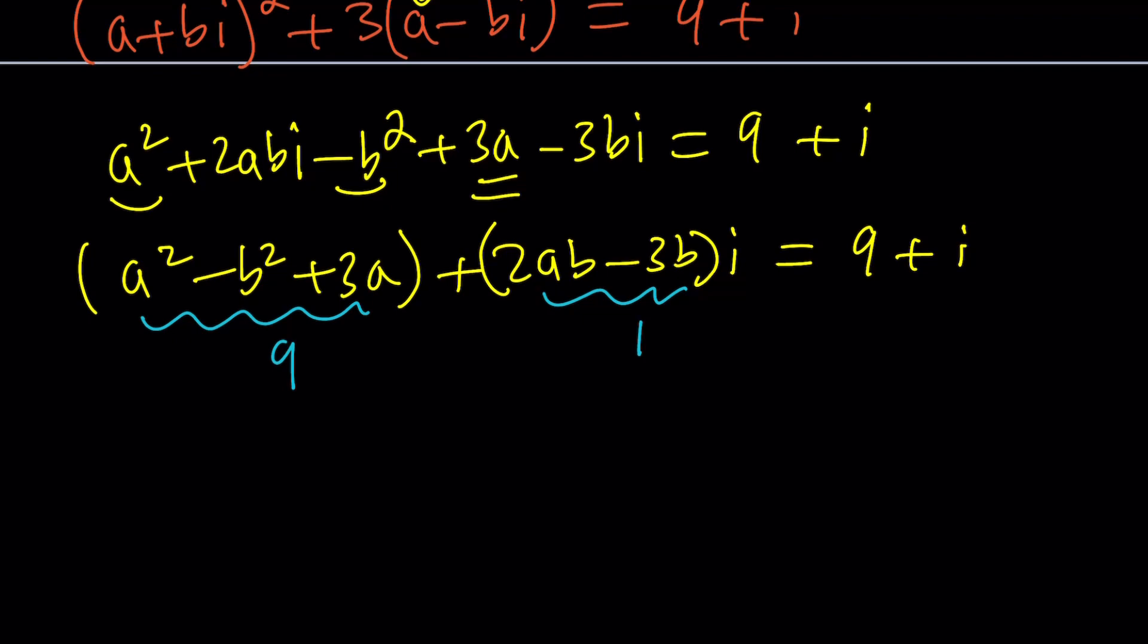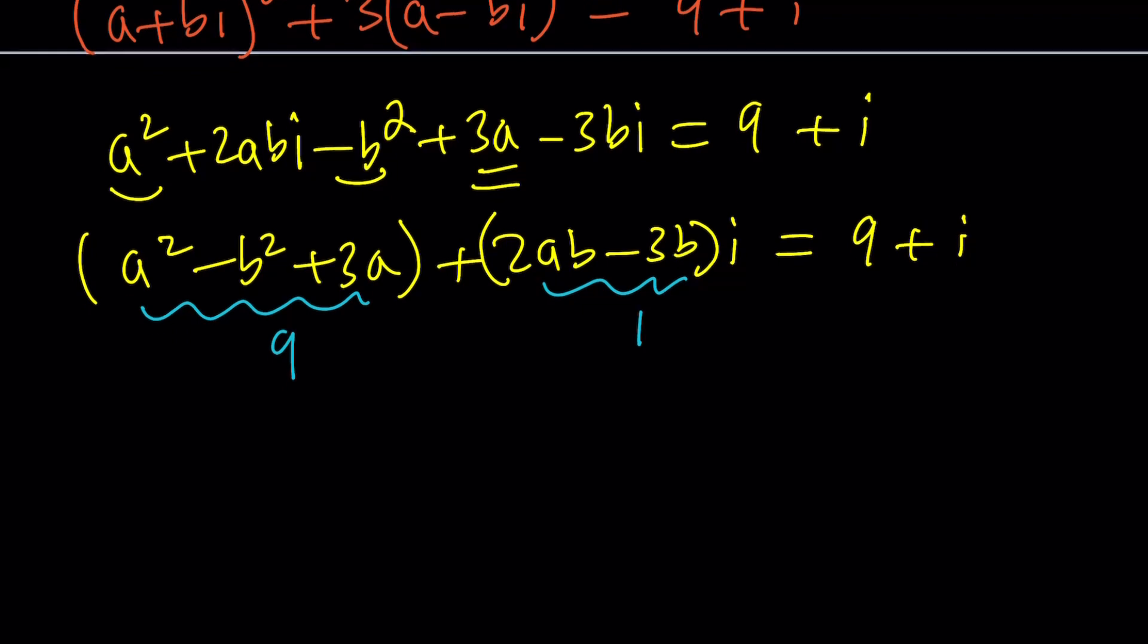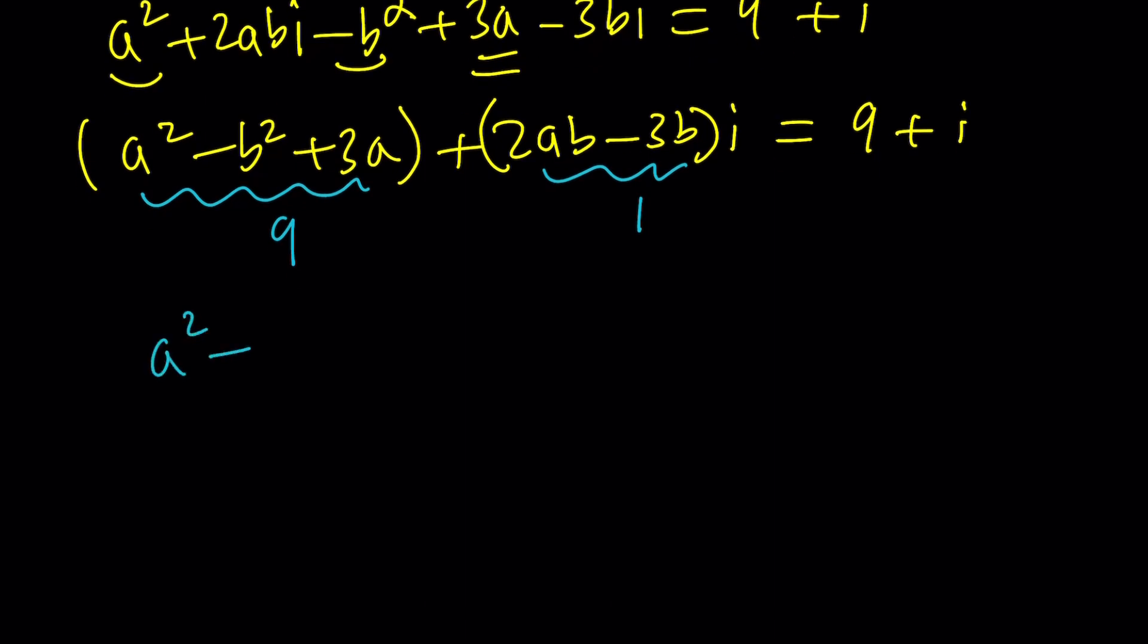This gives us a system of equations and we can hopefully solve it. A squared minus B squared plus 3 A equals 9 and 2 A B minus 3 B equals 1. So how do you solve such a system? A and B are both squared in the first equation. This is the first one and this is the second one.